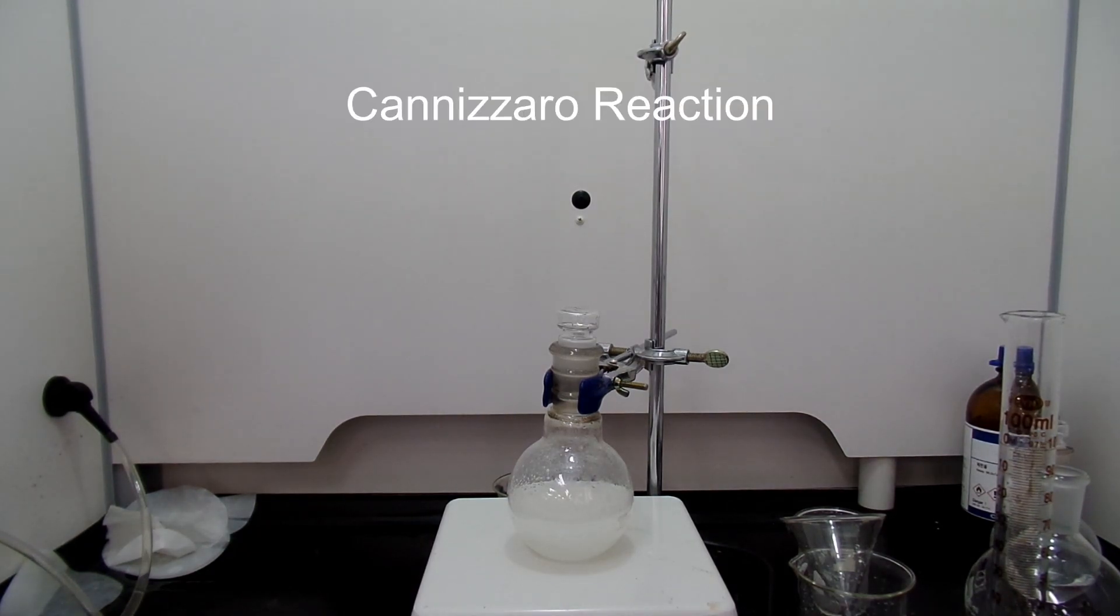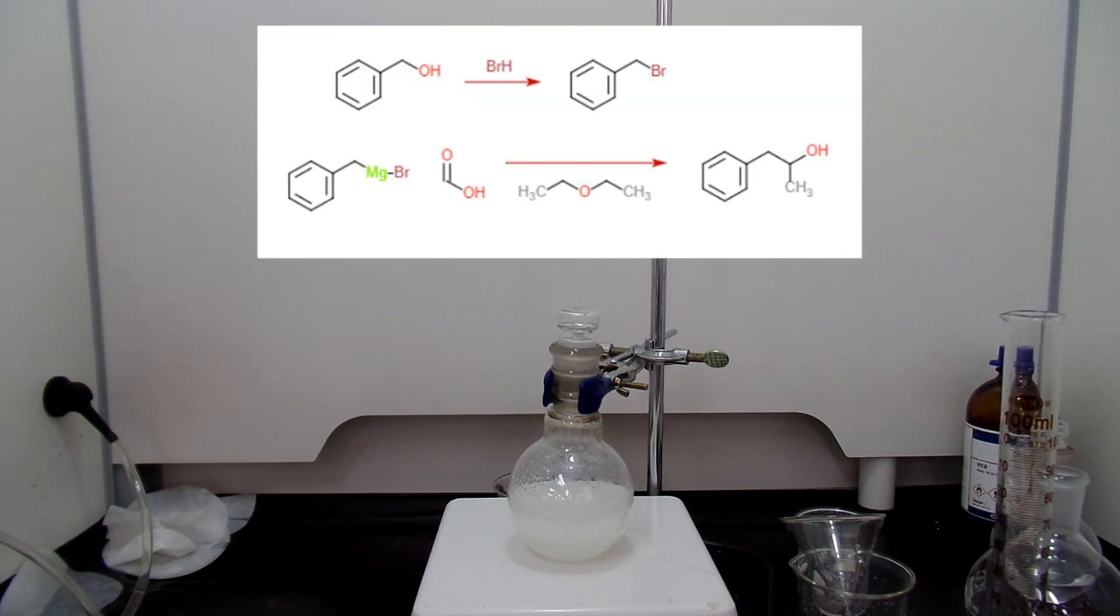The reaction that we are going to carry out in this video is called Cannizzaro reaction. The reason I'm doing this reaction is that I want to get benzyl alcohol and brominate it using hydrobromic acid, and carry out Grignard reaction with acetaldehyde making 1-phenyl-2-propanol.